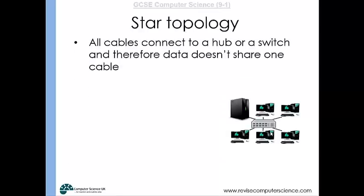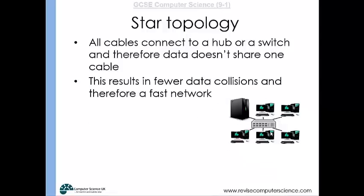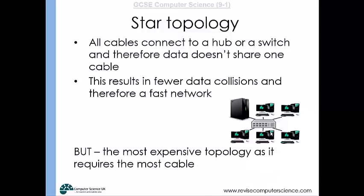Finally, the star topology uses a hub or switch at the centre of the network, with all computers connecting to it. If one cable breaks, the network can still function. There are fewer data collisions — especially with a switch directing data to intended computers only. However, it is the most expensive topology, requiring the most cabling and a central hub or switch.